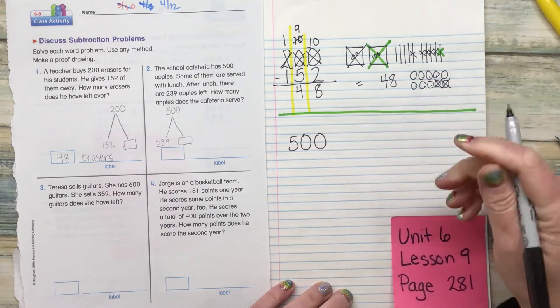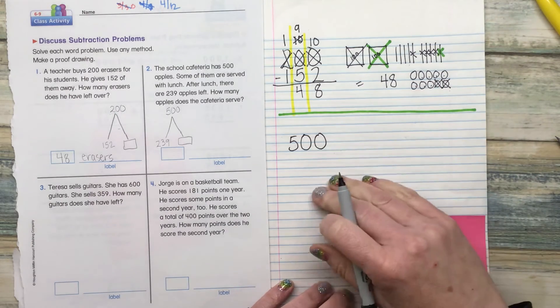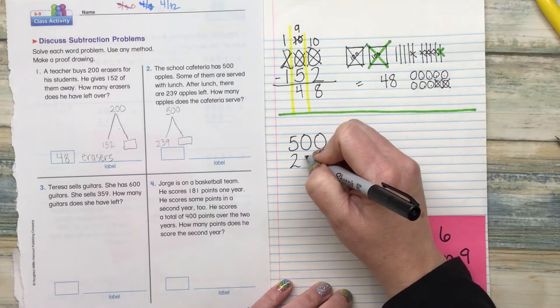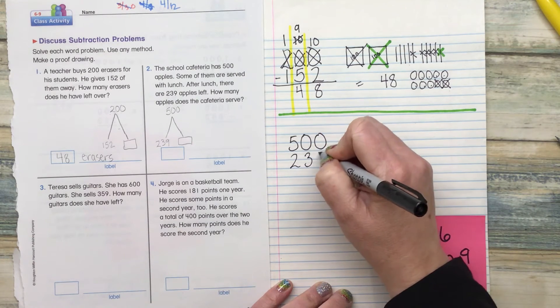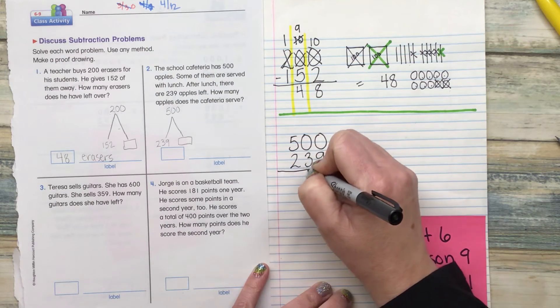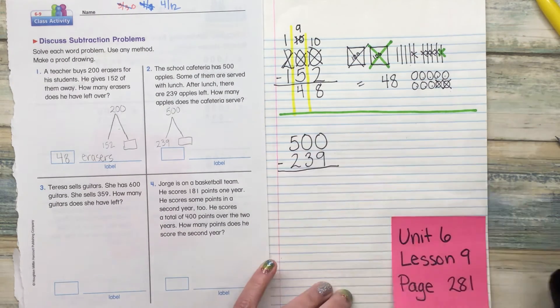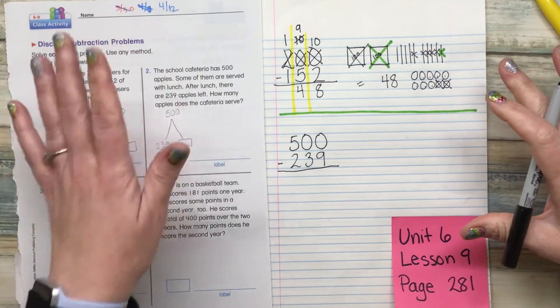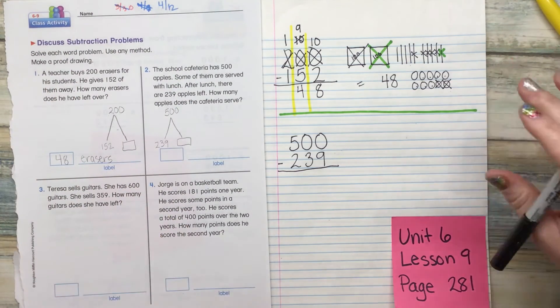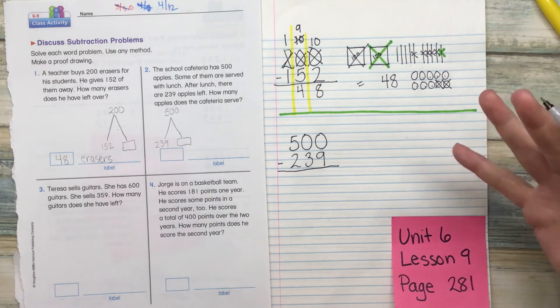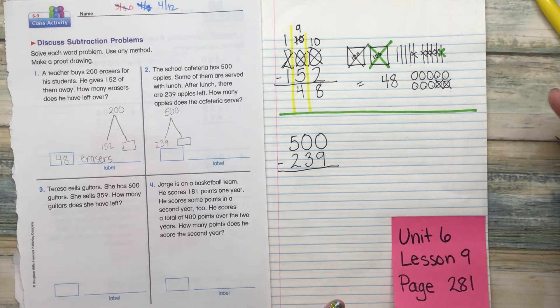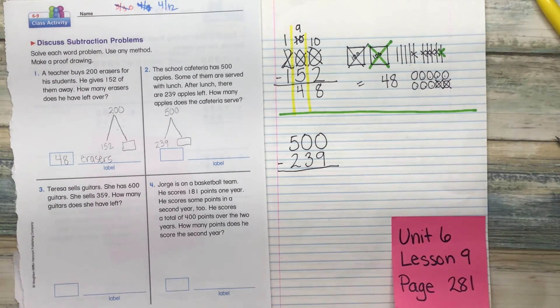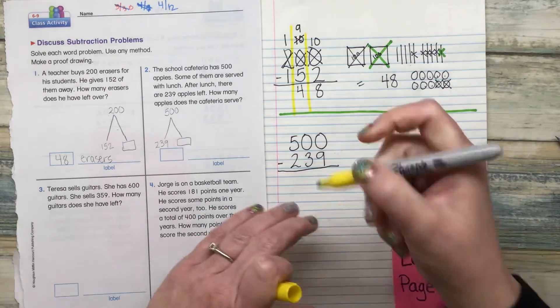So 500. You write your equation, write it big enough so that you can do all that work. Otherwise, this gets pretty messy. Minus 239. So remember, you are doing this with me. So if you do this with me, you've got half of the work done, and only two to do on your own. All right, I want to ungroup first, because I can't subtract nine from zero or three from zero. So what am I going to do? Who can tell me what I need to do?